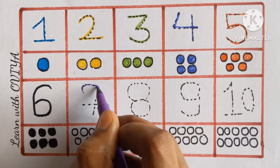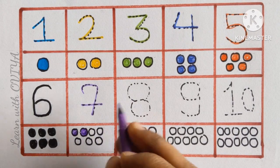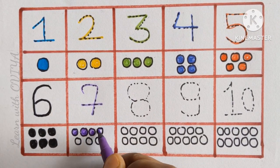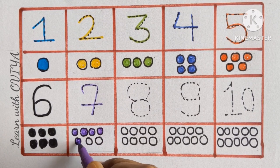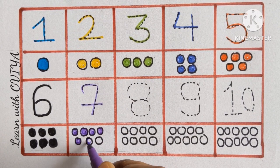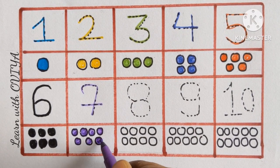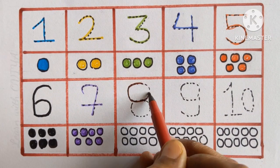Purple color. Let's color the balls with a purple color. 1, 2, 3, 4, 5, 6, and 7.